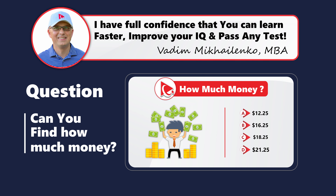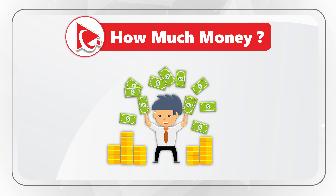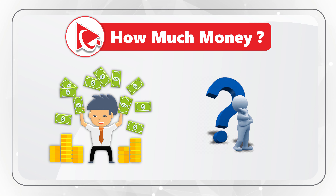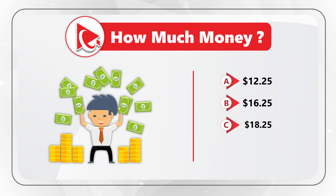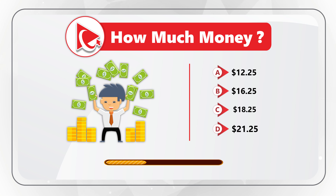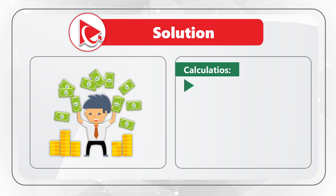Here's an excellent question to test your math skills as well as numerical reasoning. You need to count all $1 bills and quarters, and determine how much money the clerk has. Four choices: A: $12.25, B: $16.25, C: $18.25, D: $21.25. Pause this video and count all the dollar bills in the image as well as the coins. I counted 12 $1 bills and 25 quarters total.